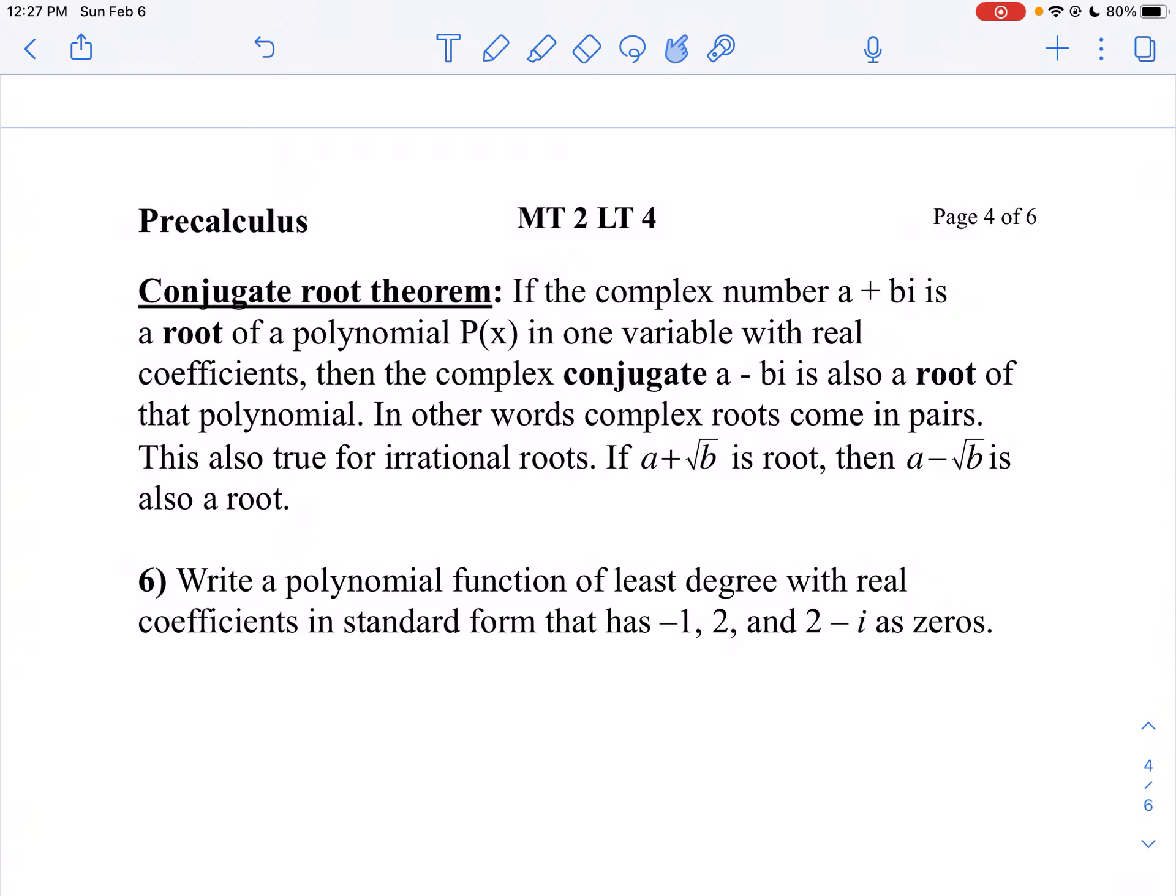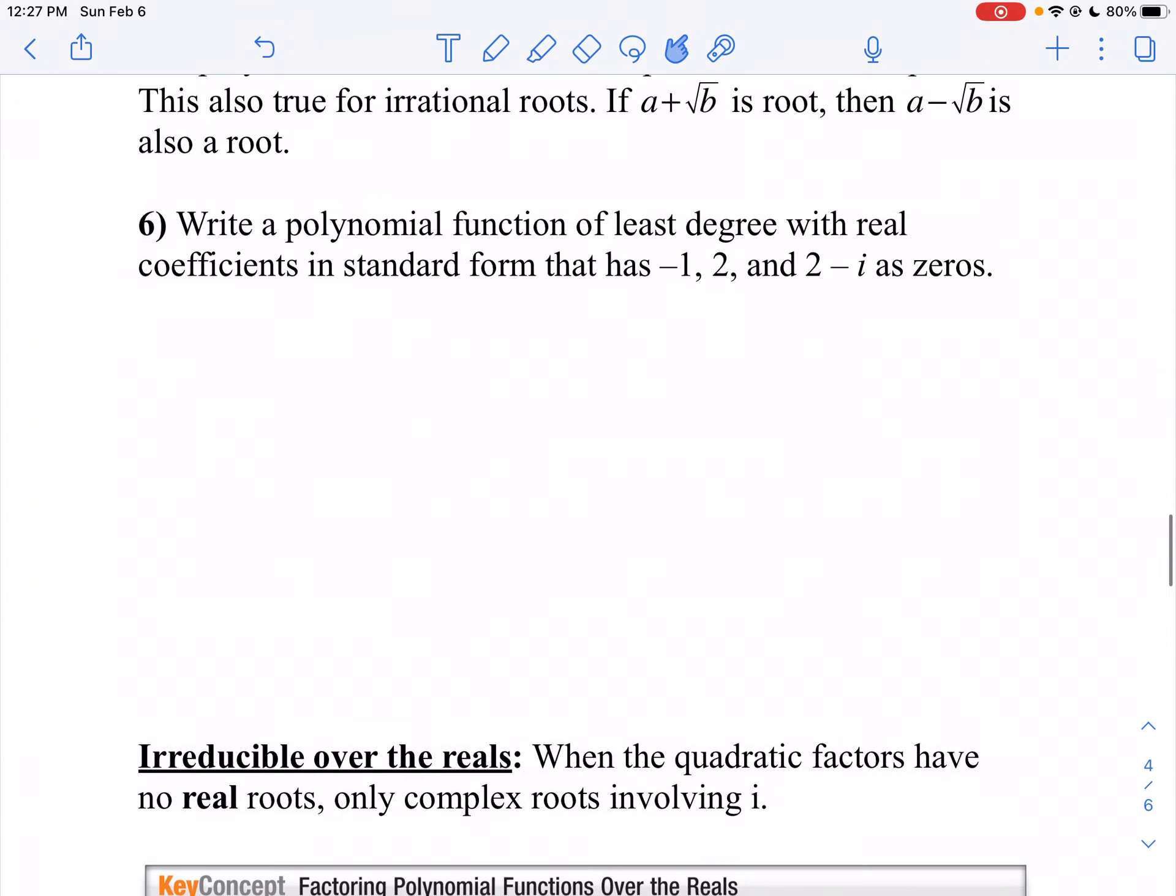Let's do a problem like that. I want to write a polynomial function of the smallest degree with real coefficients in standard form that has negative one, two, and two minus i as zeros. Notice if I have two minus i, I automatically have two plus i.